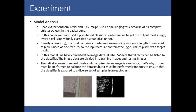In model analysis, road extraction from aerial and UAV imagery is still a challenging task because of its complex objects and background. In a scene, there are not only roads but also buildings, water bodies, and many other objects. In this paper, we used a pixel classification technique to generate an output mask image, classifying each pixel individually as road or not. To classify pixel XY, the pixel uses a predefined surrounding window centered at XY as one feature, where the input feature contains RGB values within the target pixel. The image dataset was converted to CSV format for the classifier. A dropout was performed to balance the dataset, since the ratio of non-road to road pixels is very large, and performed randomly to ensure the classifier is exposed to a diverse set of samples from each class.